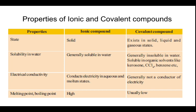Now coming on to the properties of ionic and covalent compounds. First, the state: ionic compounds are solids, while covalent compounds exist in solid, liquid, and gaseous states. Second, solubility in water: ionic compounds are generally soluble in water, while covalent compounds are generally insoluble in water but soluble in organic solvents like kerosene, carbon tetrachloride, and benzene.